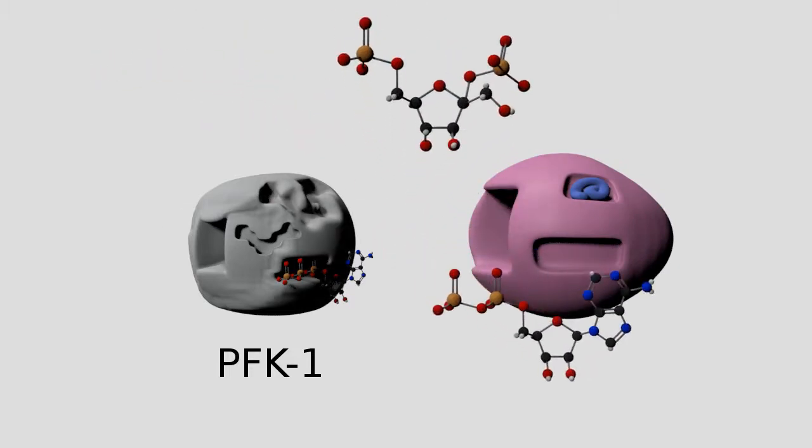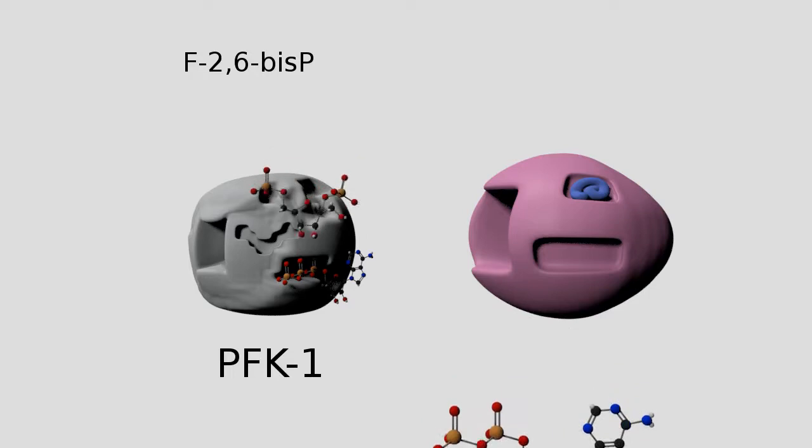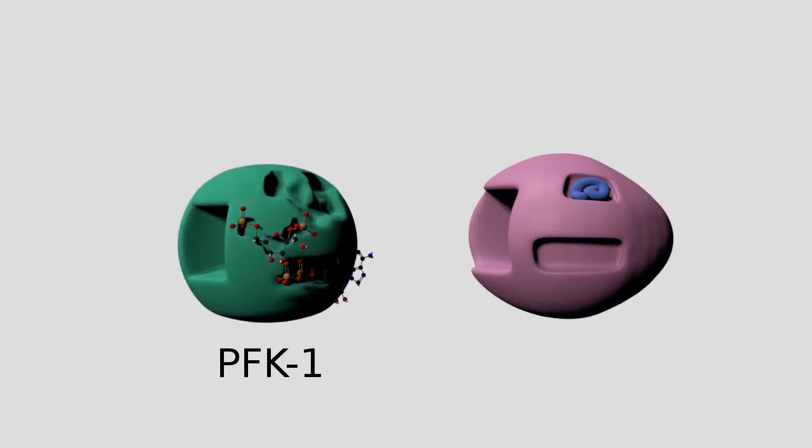For example, the hormone insulin increases the activity of PFK-2. This creates more fructose 2,6-bisphosphate, which increases the activity of PFK-1 and keeps glycolysis going, even though the pathway is being inhibited by ATP.